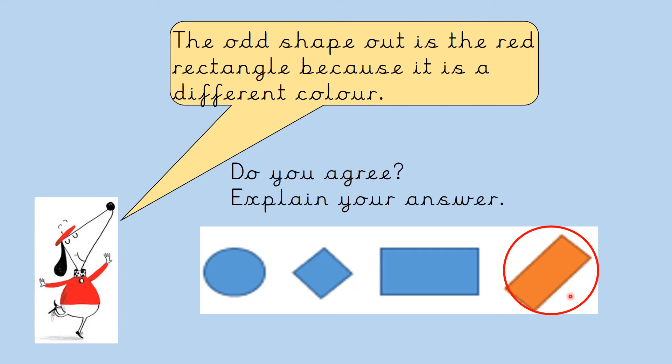Now, Claude is right that the rectangle is the odd one out if you're talking about just colour because the rectangle is red and the other shapes are blue. However, we are focusing on the shape. So, if we are talking about the odd shape, we would say that the circle is the odd shape out because a circle has only one curved side and the other three shapes all have four sides.